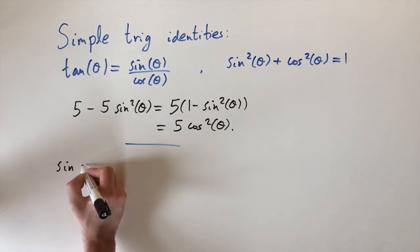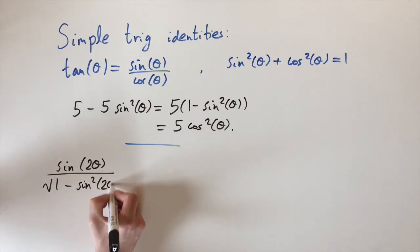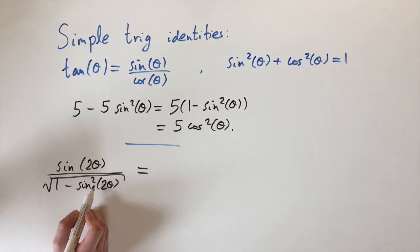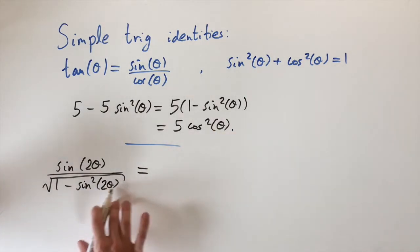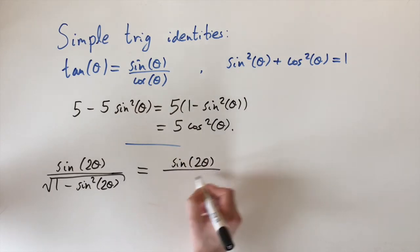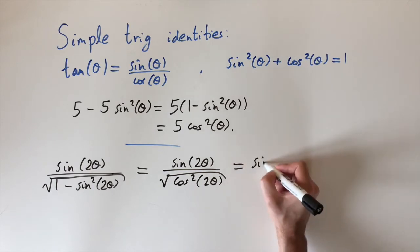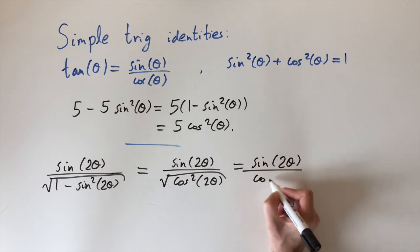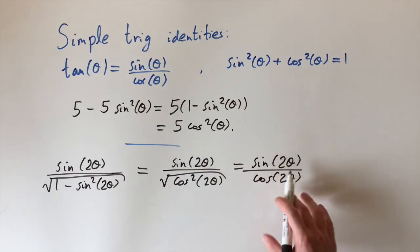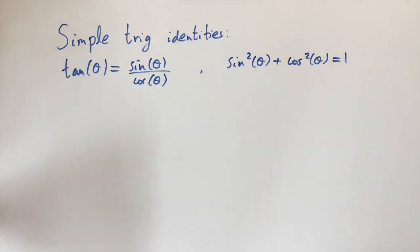The second example is sin(2θ) divided by the square root of (1 − sin²(2θ)). We look at the denominator: since 1 − sin²(angle) = cos²(angle) for any angle, applying this with angle 2θ gives √(cos²(2θ)). The square root and square cancel, leaving cos(2θ). So the expression becomes sin(2θ)/cos(2θ), and using our first identity, this is just tan(2θ).